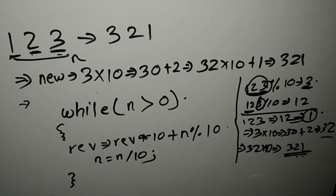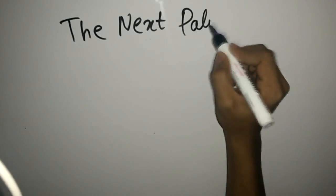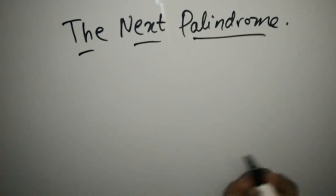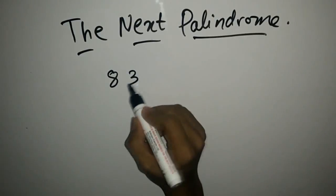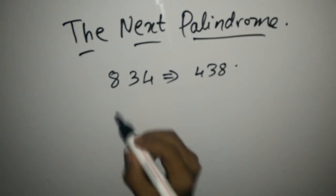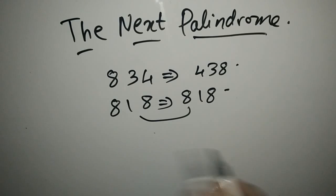Now after reversing a number, you might be thinking: why should we reverse a number and where do we need it? Let's take an example from codechef.com — the problem is called 'The Next Palindrome.' A palindrome is a number where if we take 834, the reverse is 438, which is not equal, so it's not a palindrome. But if we take 818, the reverse is also 818. Both numbers are equal, so this is called a palindrome.